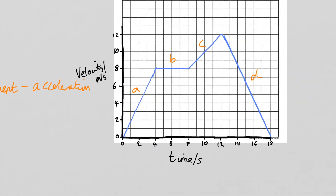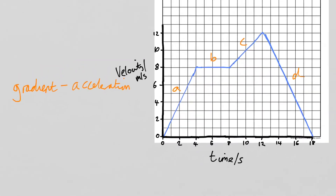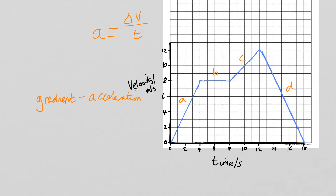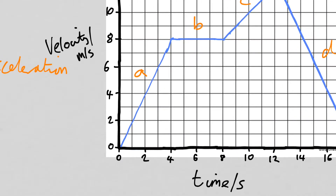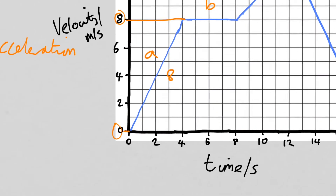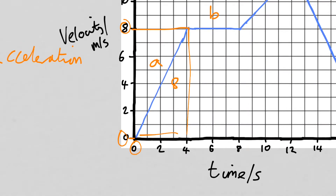Let's make some gradient calculations. The equation for acceleration is change in velocity divided by time. For section A, the velocity started at zero and went up to eight, so the change in velocity is eight. It started at zero seconds and finished at four seconds. So that's eight divided by four, which gives us two meters per second squared.